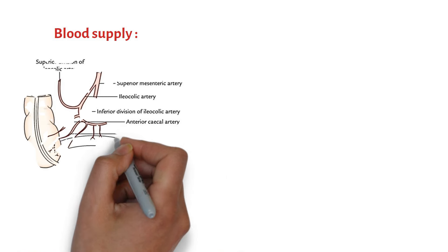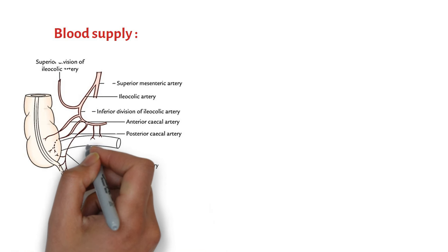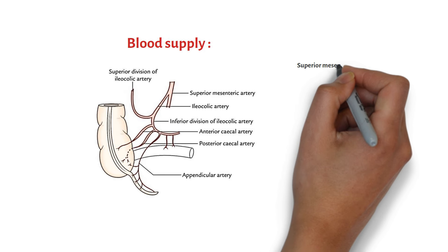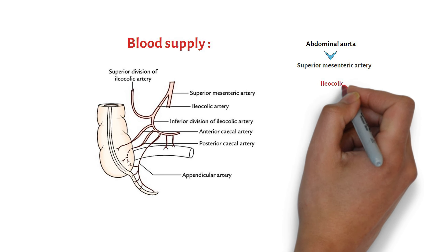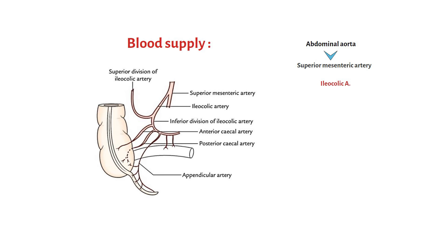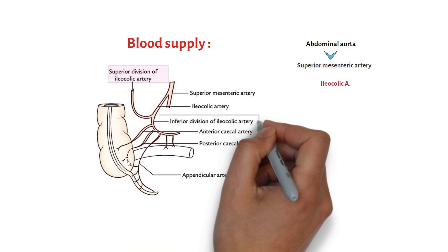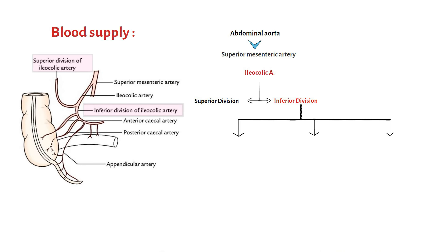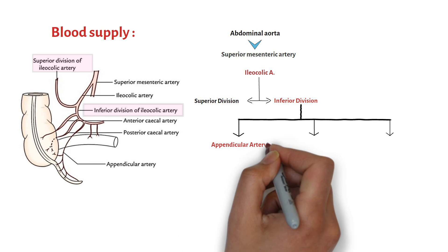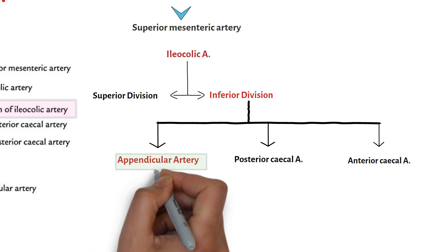Blood supply is mainly by the appendicular artery, which is a branch of the inferior division of the ileocolic artery. The superior mesenteric artery arises from the abdominal aorta and gives off the ileocolic artery. The ileocolic artery has two divisions — superior and inferior. The inferior division gives three branches: the appendicular artery, posterior cecal artery, and anterior cecal artery. The appendicular artery supplies the appendix.